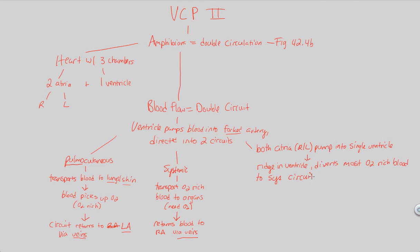Because of the forked artery, the ventricle can pump blood to either the pulmo-cutaneous or the systemic circuit. Because of this ridge in the ventricle, there's a specific push of O2-rich blood — which has come back from the pulmo-cutaneous circuit to the left atrium — diverting most of it to the systemic circuit. Simultaneously, the O2-poor blood is diverted into the pulmo-cutaneous circuit, where it will reach the lungs and skin and get oxygenated.